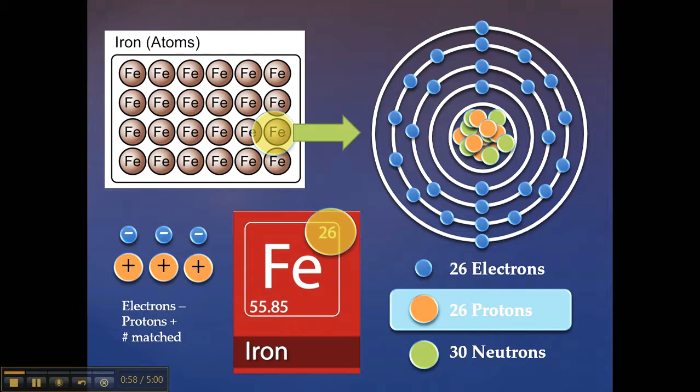In the iron atom, there are 26 protons, 30 neutrons, and 26 electrons. The protons and neutrons can be found in the bulky sphere-like center of the atom, called the nucleus, while the electrons move around the nucleus in what is called the electron cloud.